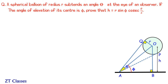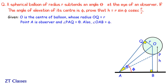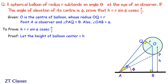Now let's see the solution. What is given: O is the center of the balloon, OQ is the radius, point A is the observer, and angles PAQ and OAB are given. We will prove this using two right-angle triangles — triangle AOQ and triangle ABO — both sharing the side AO in common. We will first solve triangle AOQ, then use triangle ABO to get our answer.